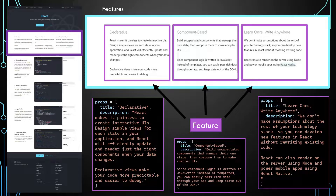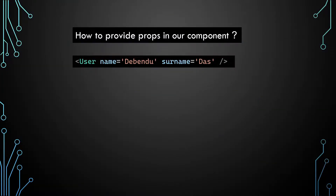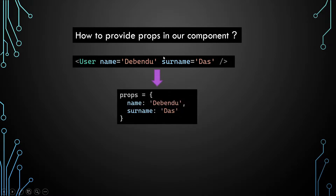So we understand the powerful use of props and why we use them — but how do we use them? The answer is through the attributes of JSX. Suppose we have a component called User and we want to pass some properties like name and surname. We can pass these props in the User component via attributes, just like HTML attributes. We also have JSX attributes, and we pass name and surname through them. These attributes are converted into a JavaScript object, and this is called the props.